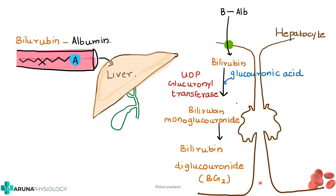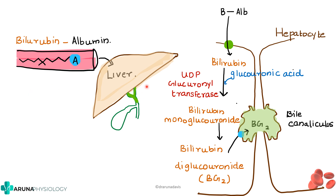This bilirubin diglucuronide, which is the conjugated bilirubin, gets pumped into the biliary canaliculi, meaning the hepatocyte secretes this conjugated bilirubin into the bile. The liver secretes it along with the bile into the biliary system, so all the conjugated bilirubin is now inside the bile.